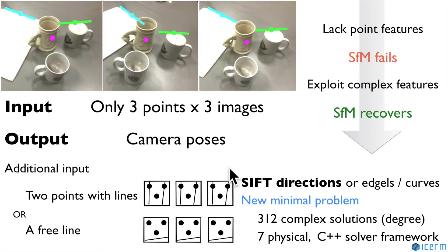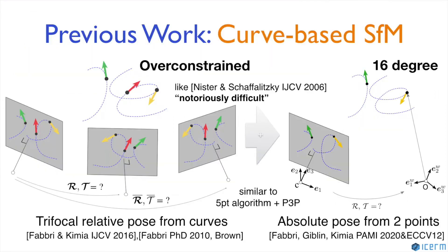The equations have 312 roots, so our solver works for other problems as well. This problem originated in structure from motion of general curves.